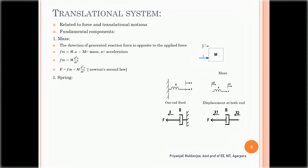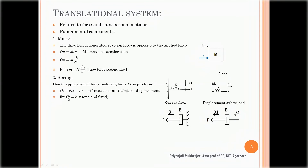The next component is the spring. The spring stores energy during the variation of its shape due to elastic deformation from the application of force F. Due to the applied force, a restoring force F_K is produced, which depends on the stiffness constant k and the displacement. So F_K equals k·x, and by Newton's law, total force F equals K·x. For a spring with both ends having displacements X1 and X2, F equals K·(X1 minus X2).